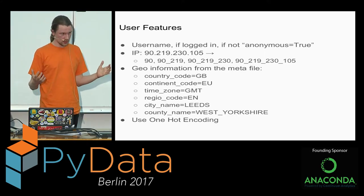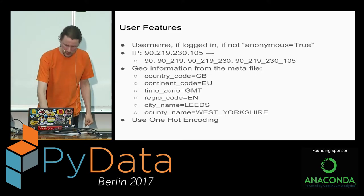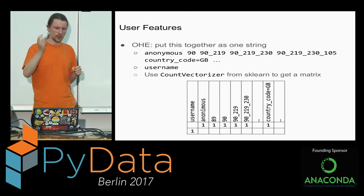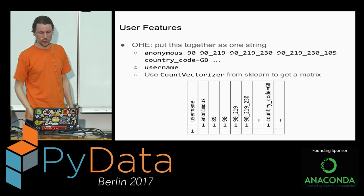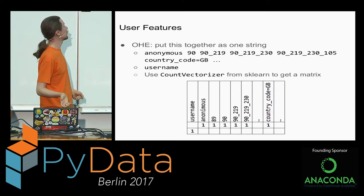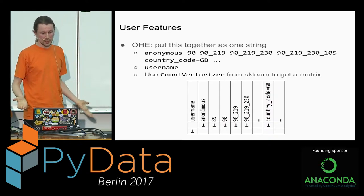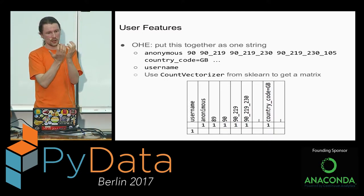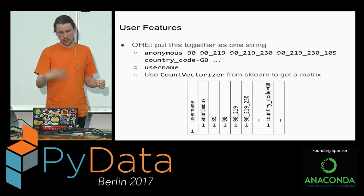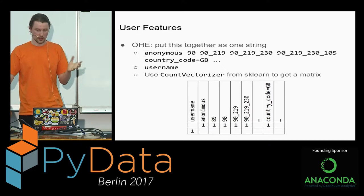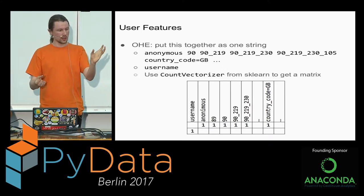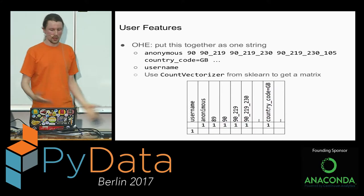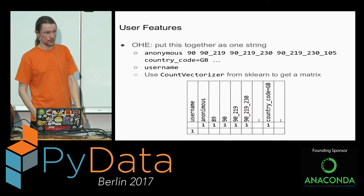The way we use these features is one-hot encoding. We create a very large matrix, and for each feature, we put a one if we see that feature. For instance, if we see that the user is from Great Britain, we put a one against Great Britain. The way I did this — since I usually work with text — is I put all these features together in one string, tokenize on space, and use CountVectorizer from scikit-learn to build that matrix. CountVectorizer maps each token to a column index and puts a one there, giving us a matrix we can use for machine learning.